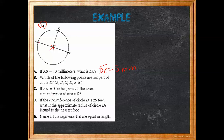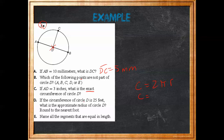If AD equals 3 inches, what is the exact circumference of circle D? We're going to use the formula C equals 2πr. When it asks for 'exact,' that means leave pi in the answer, because if we multiply by 3.14 we're not getting a truly exact answer. So we fill in: C equals 2 times pi times 3. We take 2 times 3, which is 6, and leave the answer as 6π.